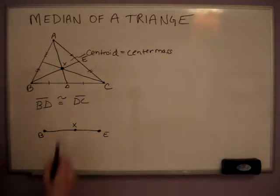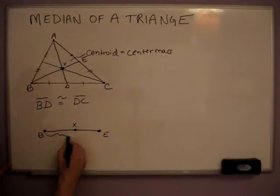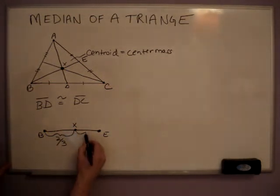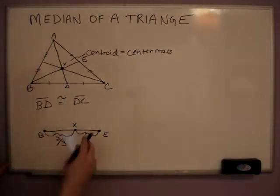There's actually a special relationship to all these. The longer portion is actually two-thirds of the overall length. And the smaller of the two is one-third. That gives you your whole line segment BE.